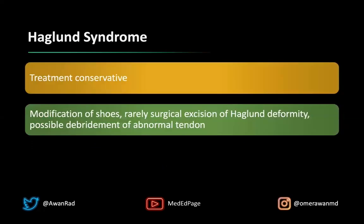This is treated fairly conservatively. We often just tell patients to lose weight or stop wearing high heels, and then the whole syndrome gets better — the tendinopathy of the Achilles tendon decreases and the retrocalcaneal bursitis also decreases. If that doesn't work, sometimes and very rarely, we surgically excise the Haglund deformity — we shave it off to make it more flat. And sometimes we can do a debridement of the abnormal distal Achilles tendon as well, as a last-line therapy.